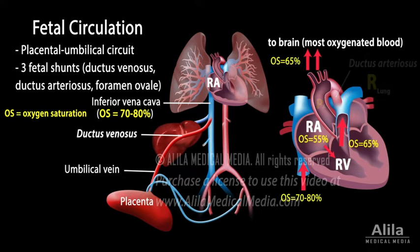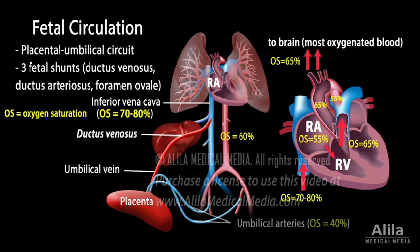Blood then enters the systemic circulation. After nourishing the fetus, it returns to the placenta via two umbilical arteries, which are branches of the fetal internal iliac arteries.